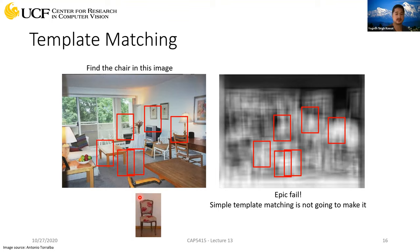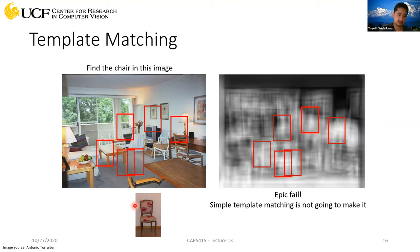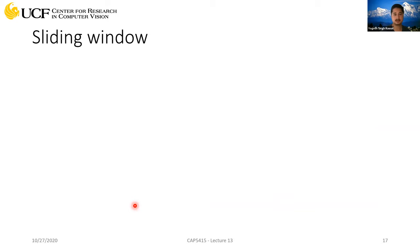Since pixel-wise matching doesn't work well, the next step is to extract features from each location instead of comparing pixel values. We compare the feature representation obtained from the extracted patch. Patches of chairs will have latent representations close to each other, and that's another way to find correlation between patches and templates.